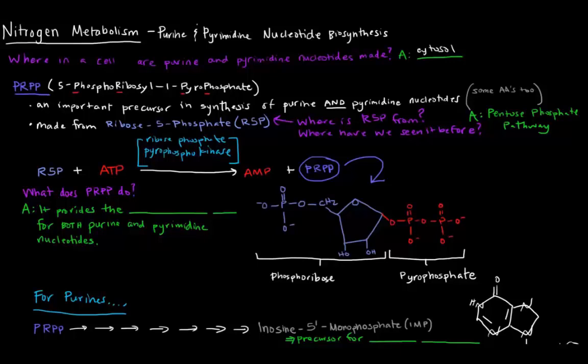Now, what does PRPP actually do, and why is it important in the synthesis of purine and pyrimidine nucleotides? Well, it provides the phosphoribose unit for both the purine and pyrimidine nucleotides. This portion here is important for the synthesis of purines and pyrimidines. This is the pentose sugar portion and the phosphate portion for those nucleotides. So that's what PRPP does.